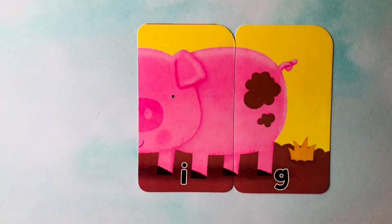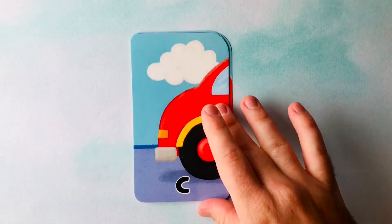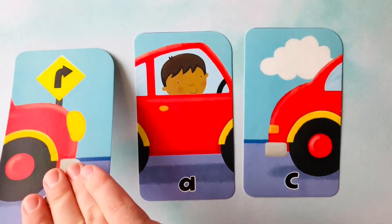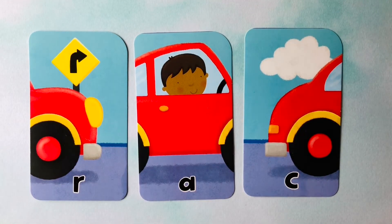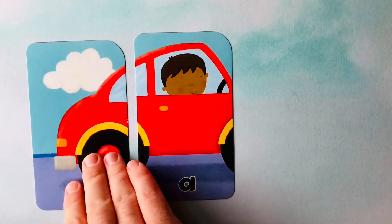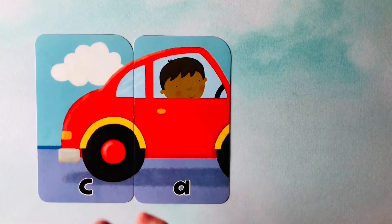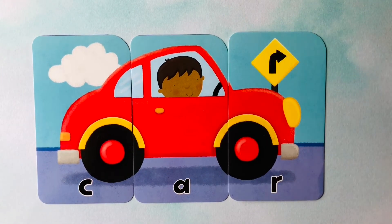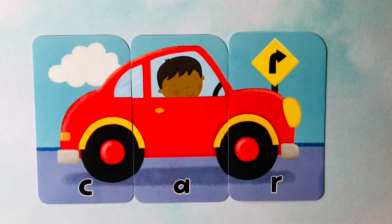Let's do another one. Looks like we're starting off with a C, an R is next, and we have an A. I think this could be a car. Do you know how to spell car? It starts with a C, then it's followed up with the A, and we have an R. C, A, R. That spells car. Can you spell it with me one more time? C, A, R — for car.